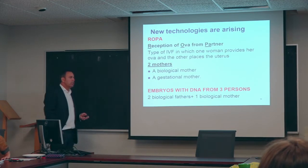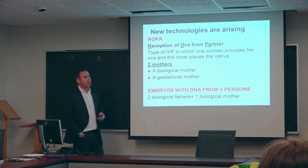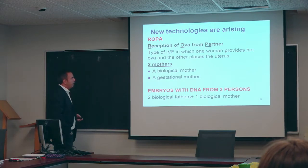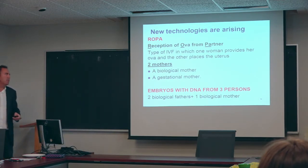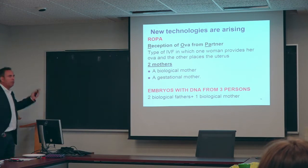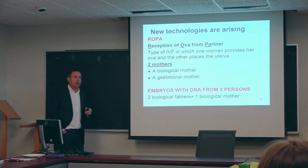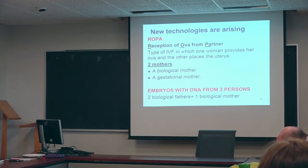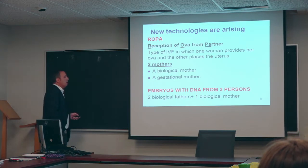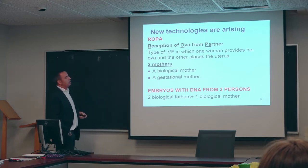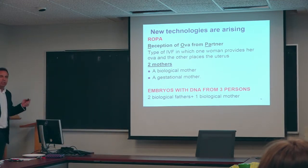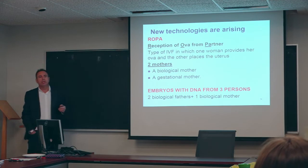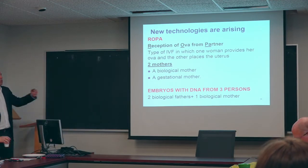At the same time, science is progressing and challenging the world, because we have new technologies like ROPA—reception of ova from a partner. It's a type of IVF in which one provides ova and the other carries the pregnancy in her uterus. So in this type of reproductive technology, we have two different mothers: a biological mother—the one who provides her ova—and the gestational mother—the one who carries the pregnancy. We also have very recent techniques like embryos with DNA from three persons, so in this case we have two biological mothers and one biological father. The new scientific discoveries are very challenging.